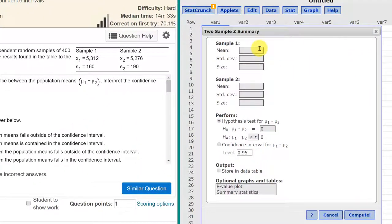We need to put the mean in there, 5312, the standard deviation of the first one, 160, the sample size 400, and then again 5276, 190, and 400.